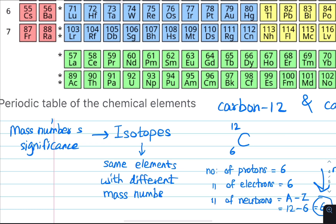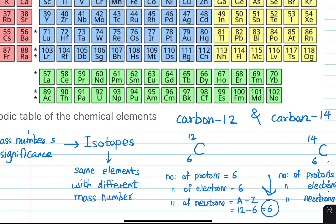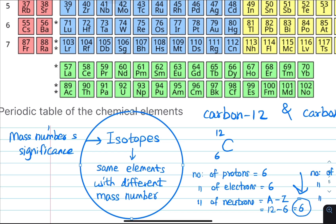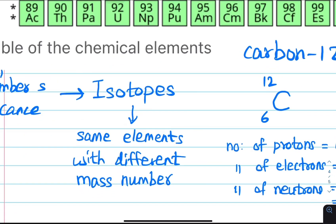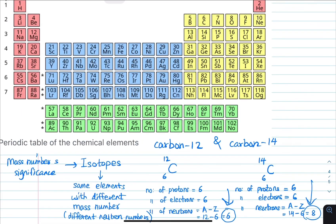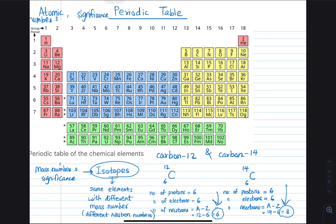In the exam, carbon-12 and carbon-14 — the mass number is different. What is the difference between isotopes? The same element has a different mass number. Mass number is different, giving different numbers of neutrons. All isotopes of the same element have the same atomic number but different mass numbers. This is the significance of atomic number, mass number, and isotopes. If you like this video, subscribe to our channel.